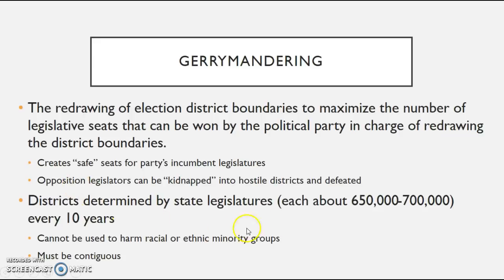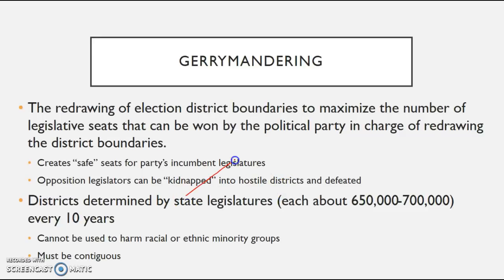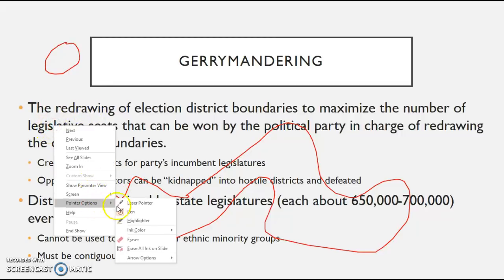Each district is roughly equal in size — from 650,000 to 700,000 people, plus or minus depending on the state. They have to be roughly equal in size, they cannot be used to harm racial or ethnic minority groups, and they must be contiguous — meaning the line has to be continuous. For example, two separate non-connected shapes cannot be the same district; there can be no space separating them.